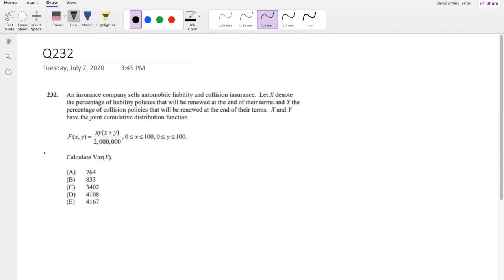An insurance company sells automobile collision insurance that has a CDF of this. We're trying to find the variance. We know variance to be this formula, which is the second moment minus the expectation squared.